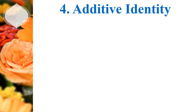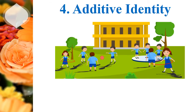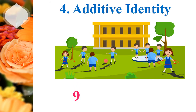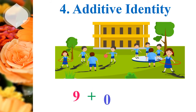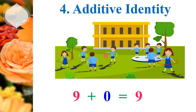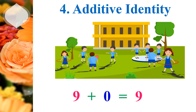Now, coming to the fourth property: additive identity. Here, how many students are playing? Nine students. Let's assume that no students join in between until the end of the class. How many students are there? Nine students. So we learn from this: when you add zero to any number, it does not change the value.